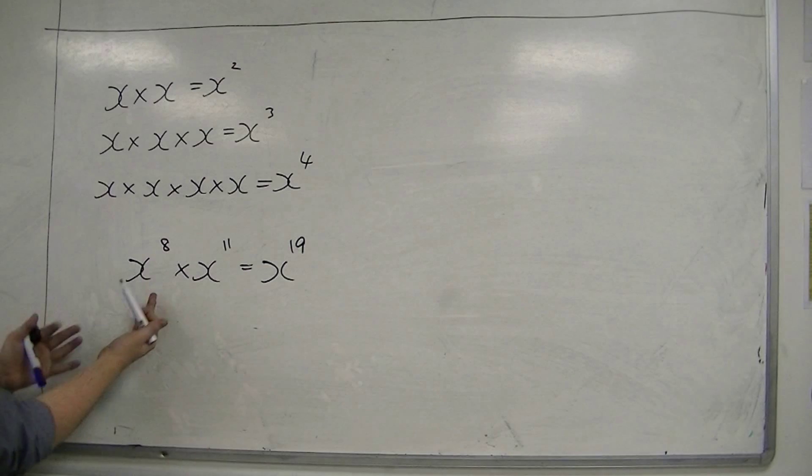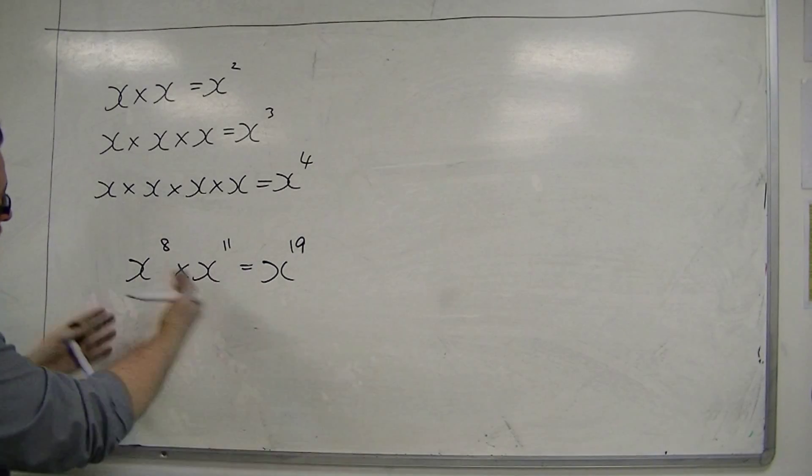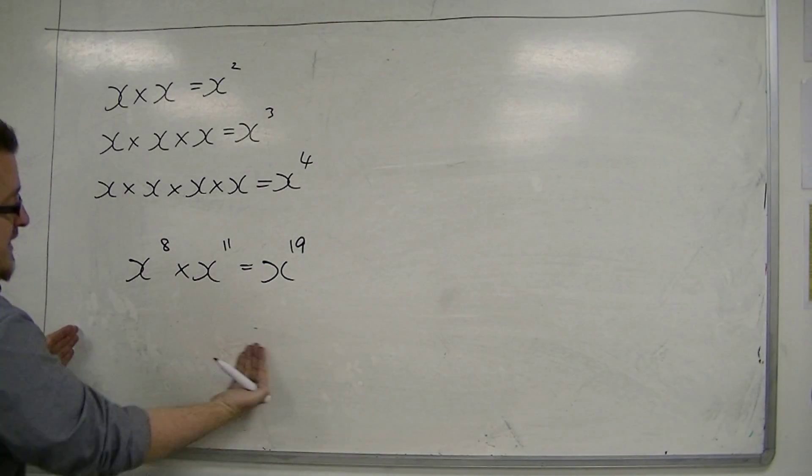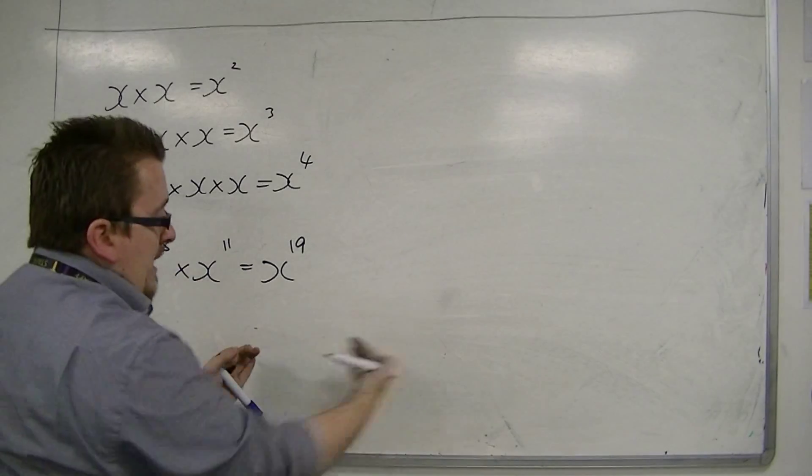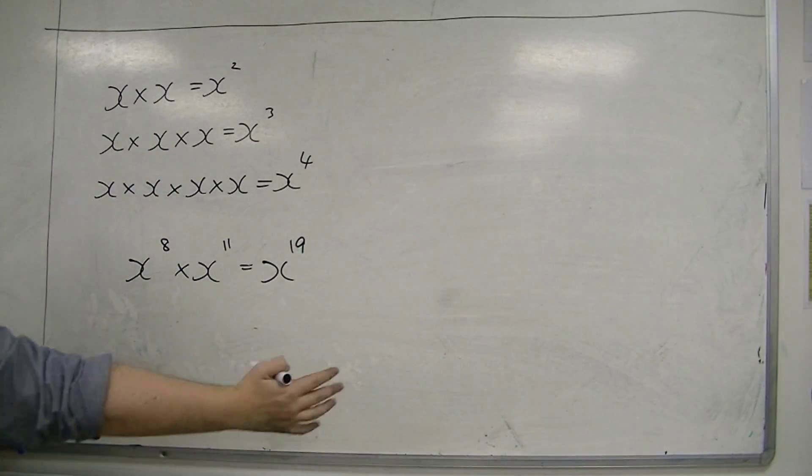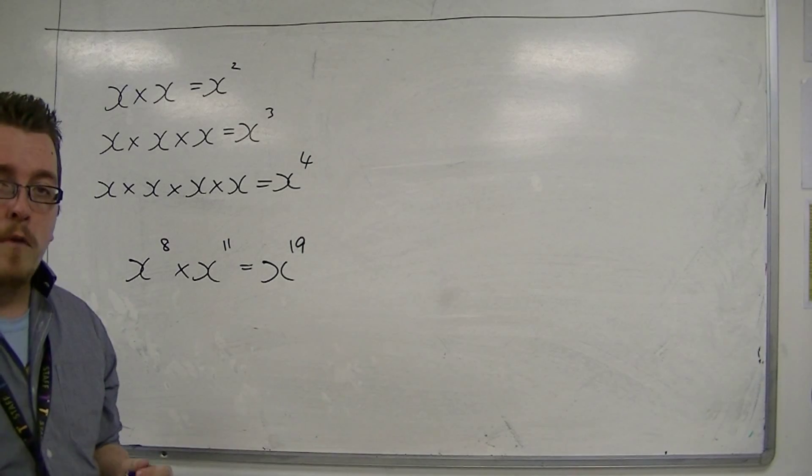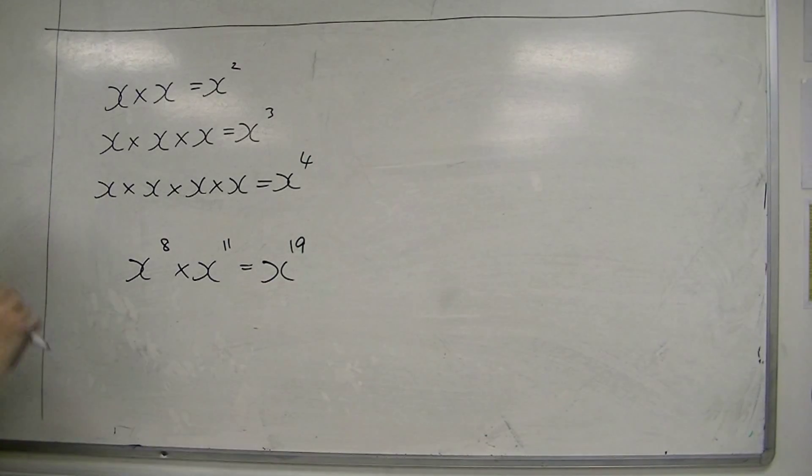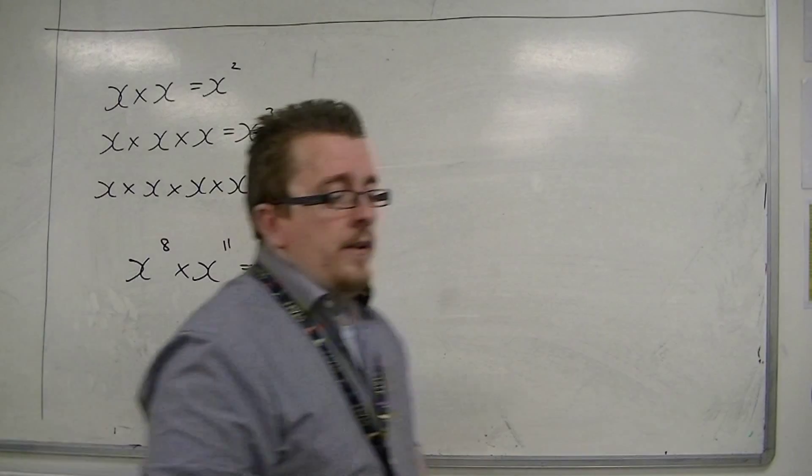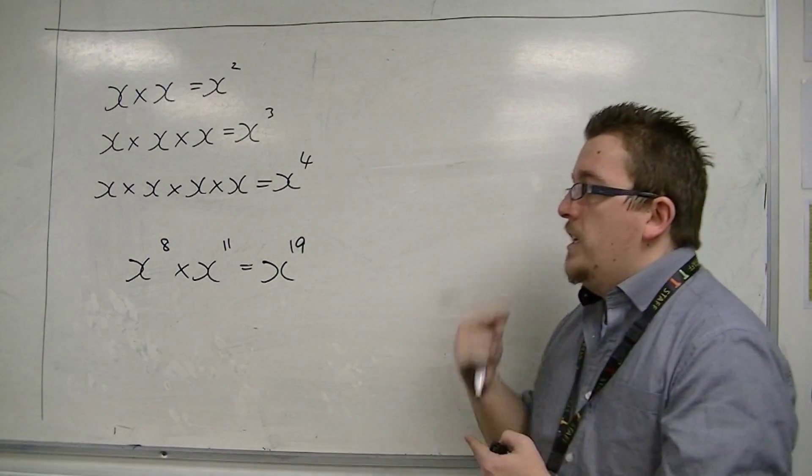That's because if I had x to the power of 8, that would be 8 x's in a row, followed by 11 x's in a row. So all together, I would have 19 x's multiplied together. So x to the 19. So if you multiply, you add the powers.